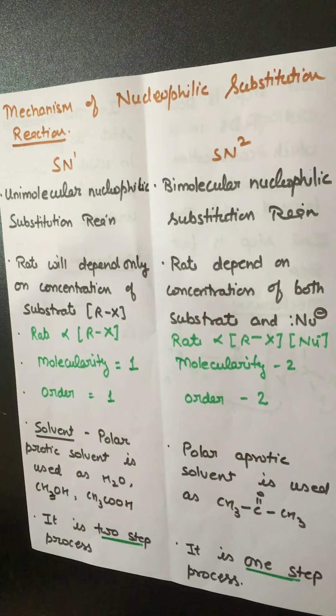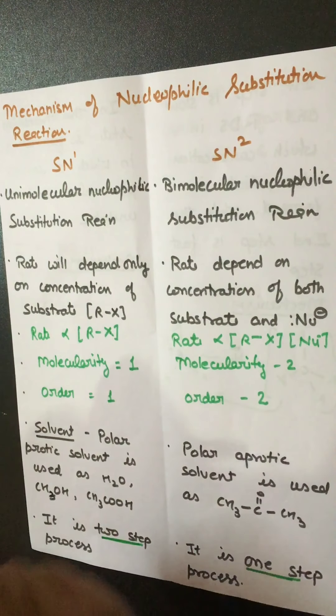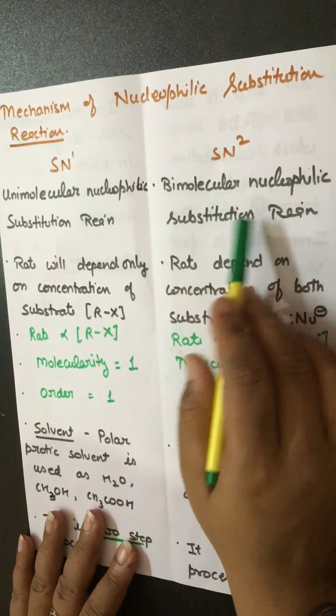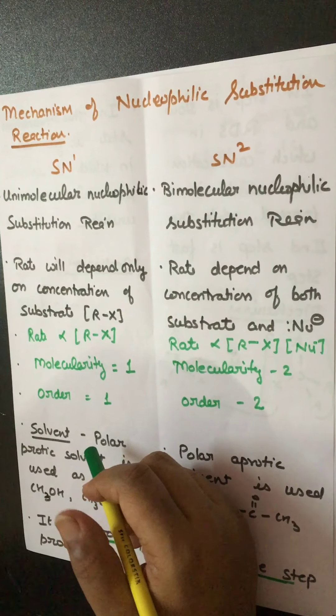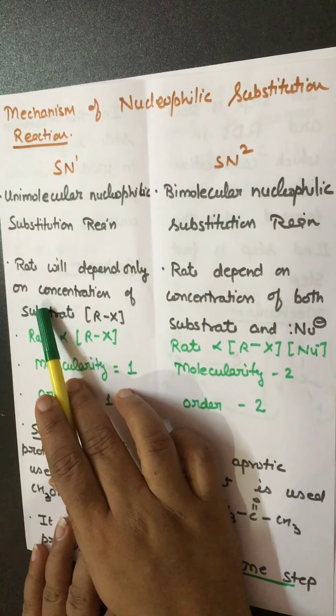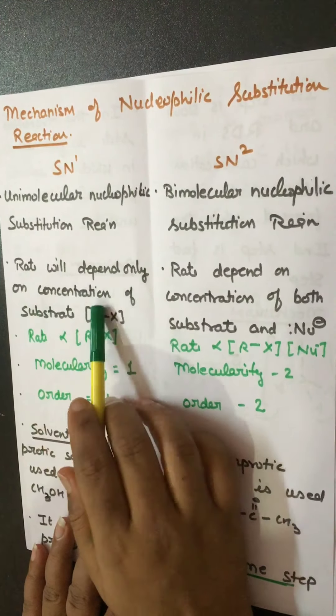Here we compare SN1 and SN2. SN1 means unimolecular nucleophilic substitution reaction. Unimolecular means the rate of reaction depends only on one molecule, and that is the substrate. The substrate in this reaction is the alkyl halide. So in SN1 reaction mechanism, rate depends on the concentration of the alkyl halide, i.e., the substrate (RX).